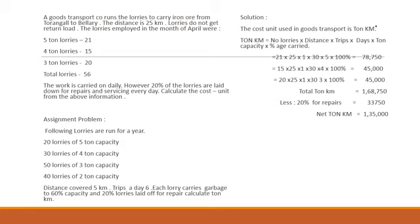Now we calculate ton-kilometers for the 15 lorries: number of lorries 15 × distance 25 kilometers × trips 1 × days 30 × ton capacity 4 × 100% = 45,000 ton-kilometers.